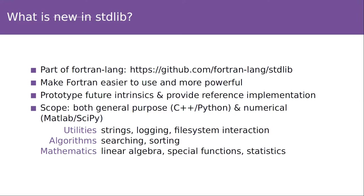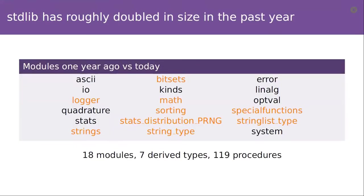In the past year we've made really good headway. By raw count of the number of modules in the project, the standard library has roughly doubled in size since last year's FortranCon. A year ago it looked more like a grab bag of utilities than a proper cohesive standard library — we had ASCII tools, some simple quadrature rules, some simple BLAS routines. But now it's expanded to be much more deserving of its name, with lots of exciting development especially in general purpose programming functionality like string handling, sorting, logging, and support for BitSets.